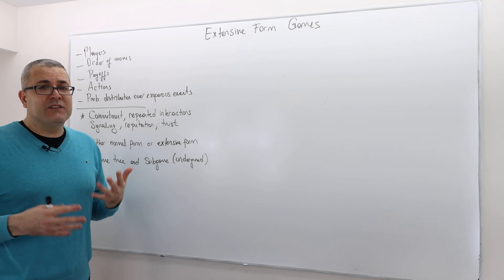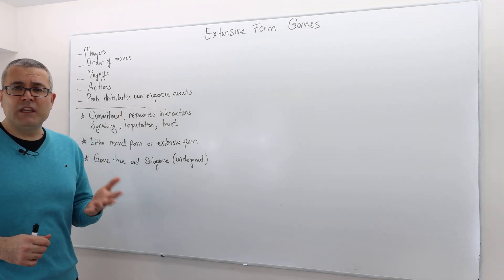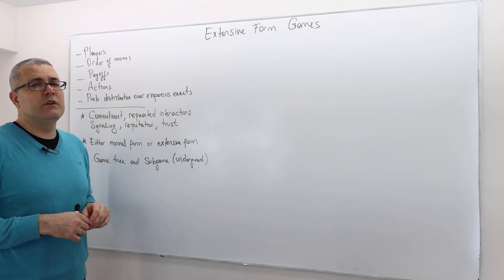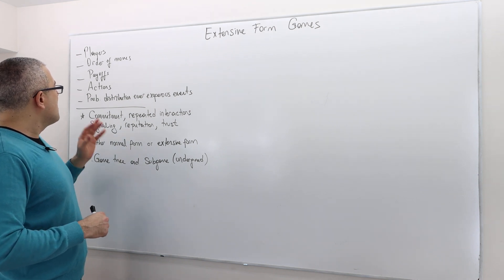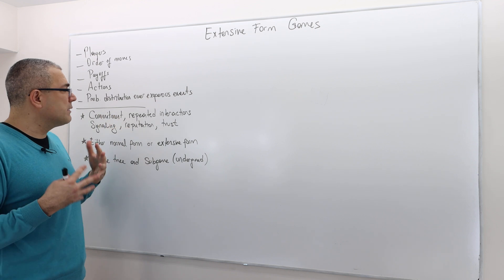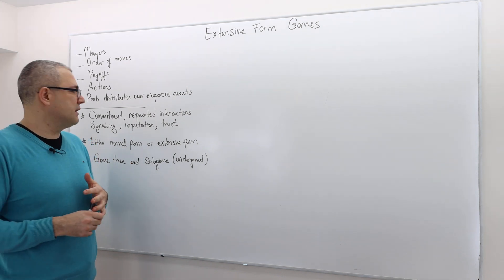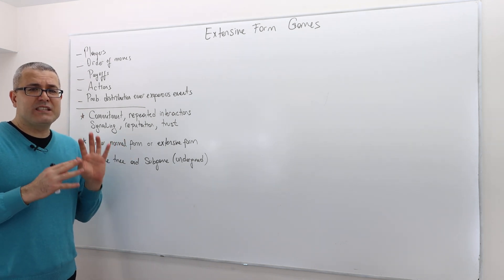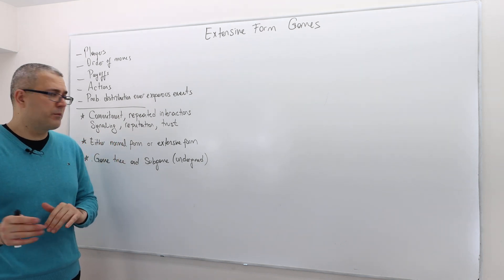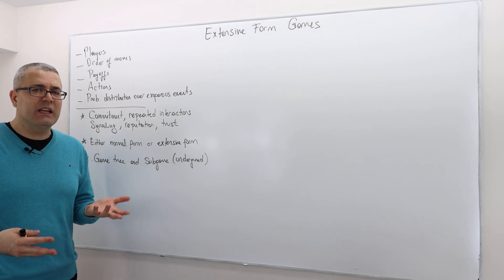Also, the probability distribution over any exogenous events — we should be specific about this. In this chapter, I'm not going to really talk about games with incomplete information or exogenous events, but I'm going to include it in our description of extensive form games. Extensive form games are richer setups than simultaneous move games. In those games, we can study things like commitment, repeated interaction, notions like reputation, trust, and signaling. We can analyze them either as a normal form or strategic form game, or leave it as an extensive form game and analyze accordingly. That depends on what type of question you're tackling.